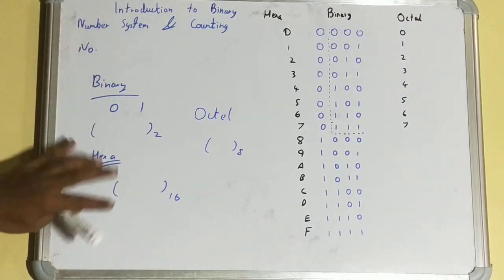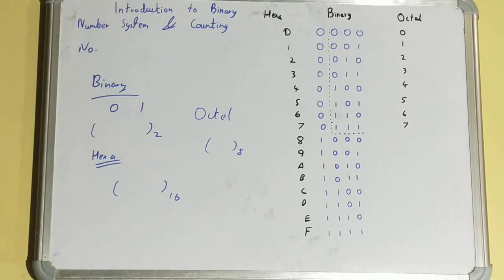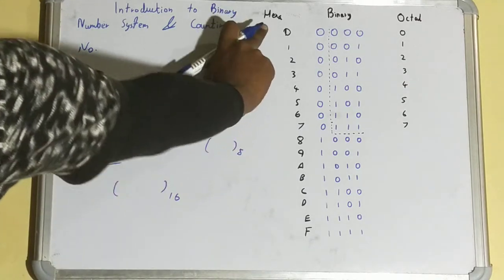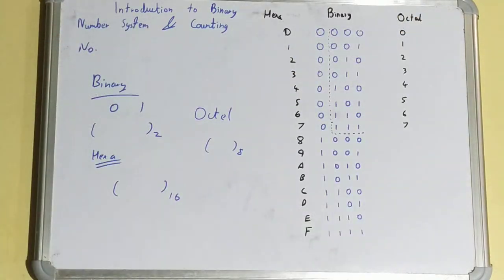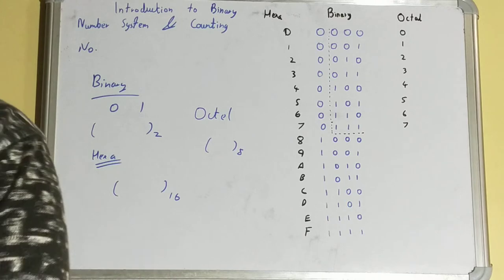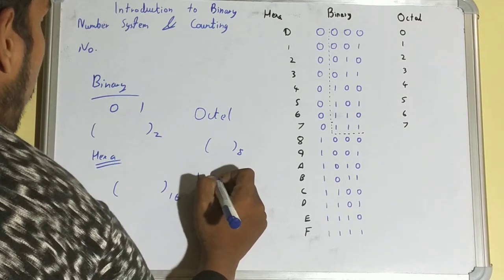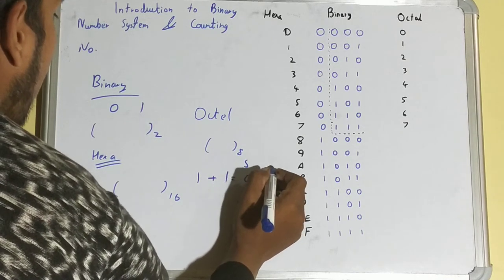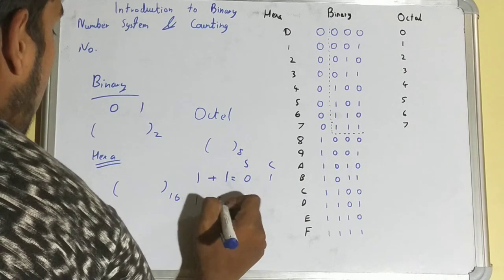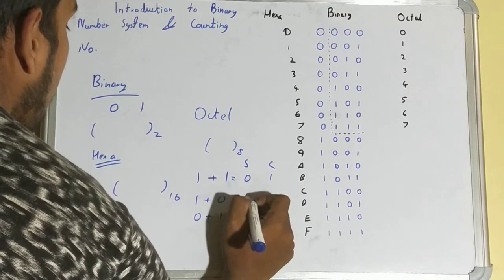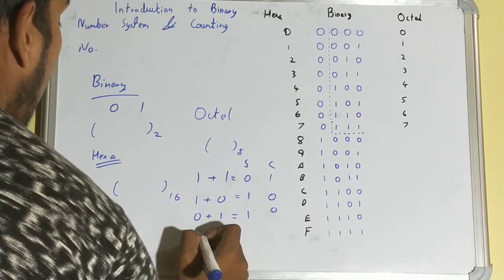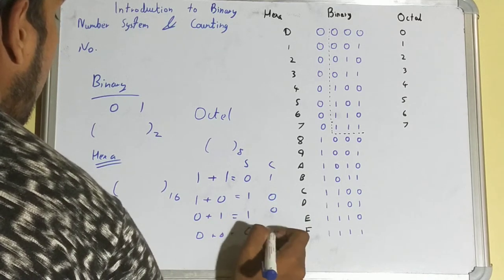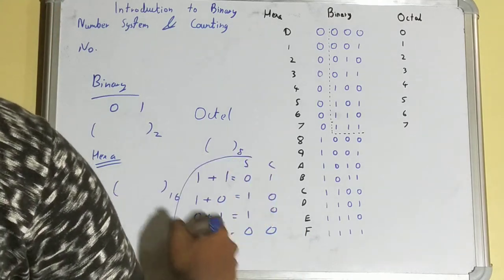Now, looking at the table — you can see entries for hexadecimal, binary, and octal. To draw this table, I used binary addition rules. For example: 1 + 1 gives sum = 0 with carry = 1; 1 + 0 or 0 + 1 gives sum = 1 with carry = 0; and 0 + 0 gives sum = 0 with carry = 0.